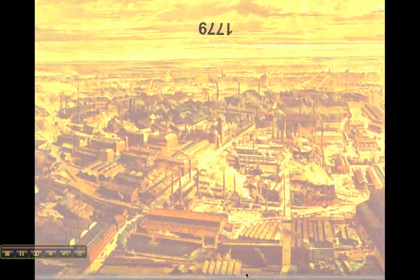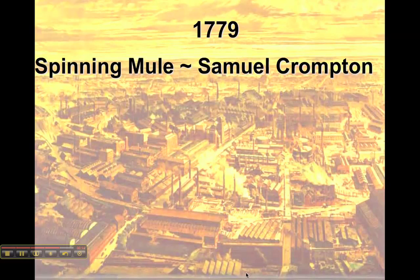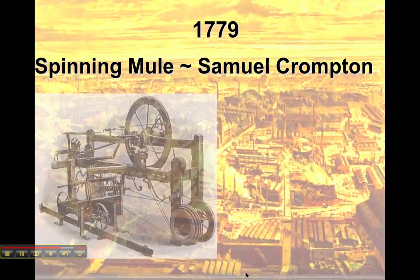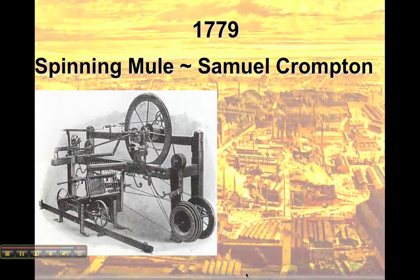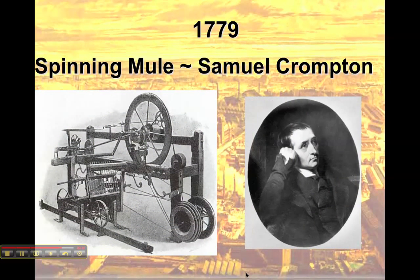In 1779, Samuel Crompton combined the two inventions and created the spinning mule, which was powered by water and produced many threads at a time.